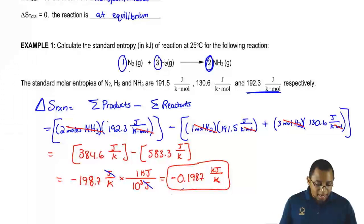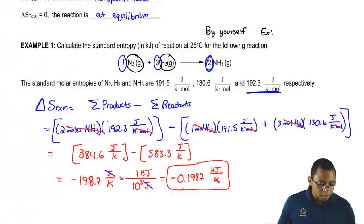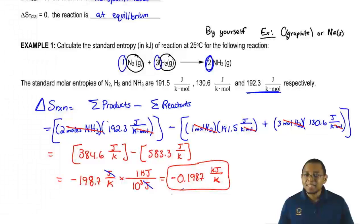Here we're going to say that N2 and H2 are both in their natural states. Remember, your natural state means you're by yourself, you're an element by yourself, example carbon graphite or sodium solid. Or you're connected to copies of yourself, such as N2 or H2 or S8 or P4.